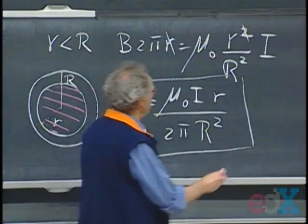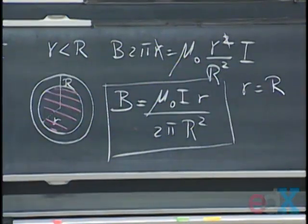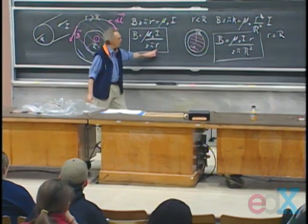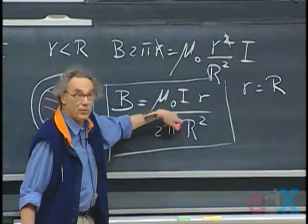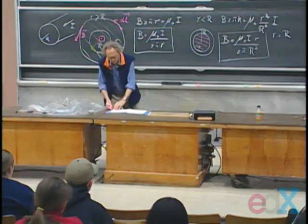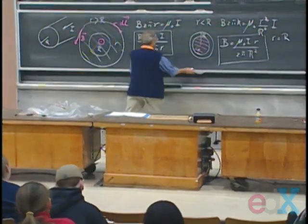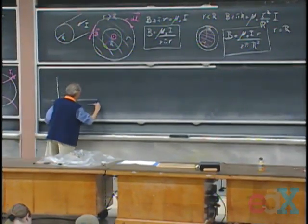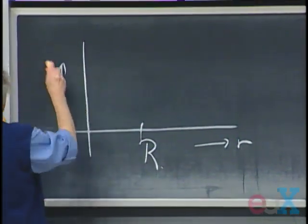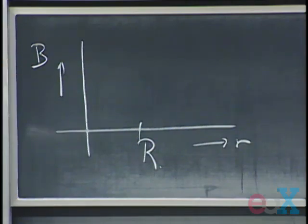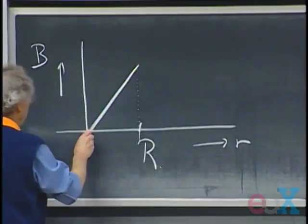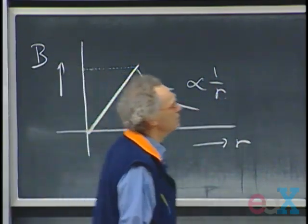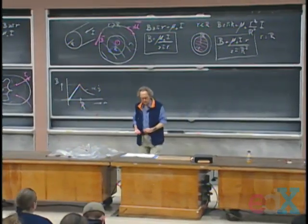If you substitute r equals R into the inside formula, you get exactly the same result as the outside formula — the field is continuous at the surface of the wire. So if you plot B as a function of r: it is a straight line inside (linear in r), and falls off as 1/r outside. The maximum value occurs right at r equals R.